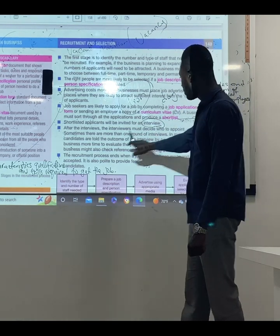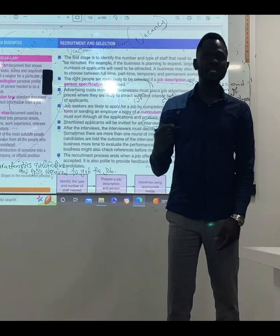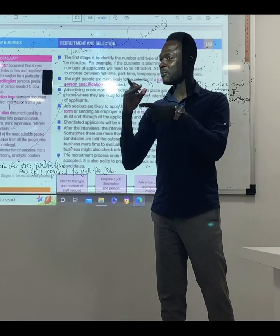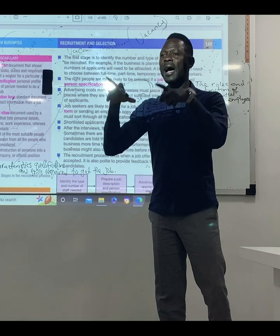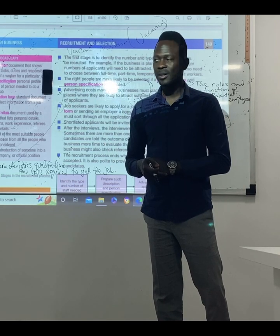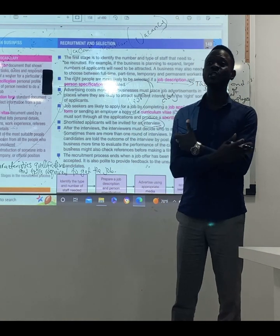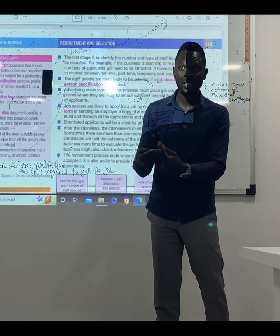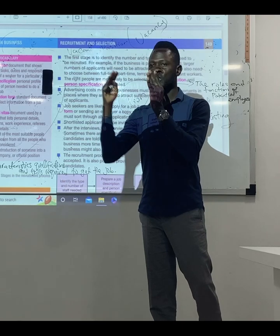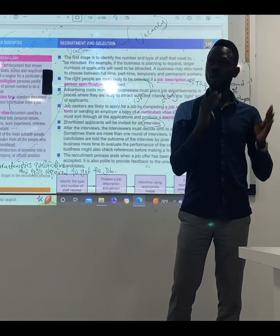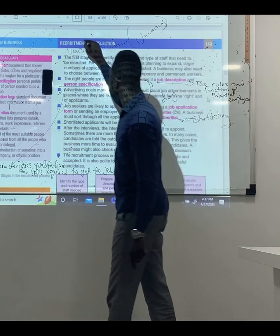As soon as the interview is done, the interviewer must decide who to appoint. The vacant positions might be four, but the shortlisted candidates might be ten or fifteen — so amongst them they will choose four, the best among the rest. Those that are successful will be employed and told they have a job. Those that are not successful will be sent a note, call, or message telling them to try next time.